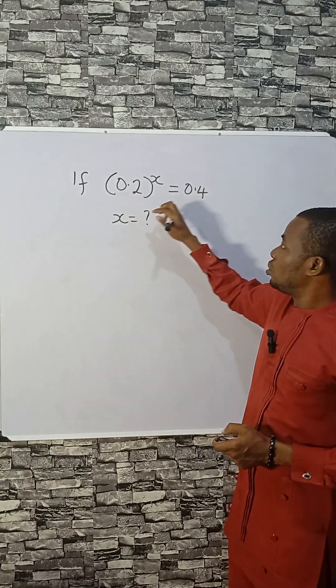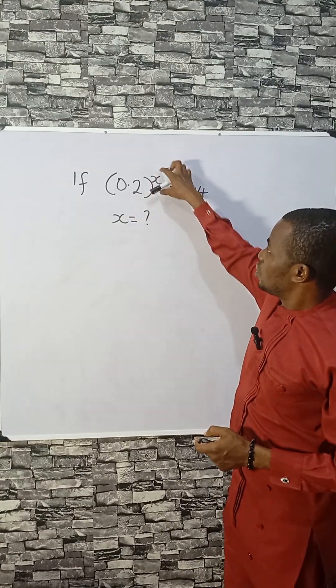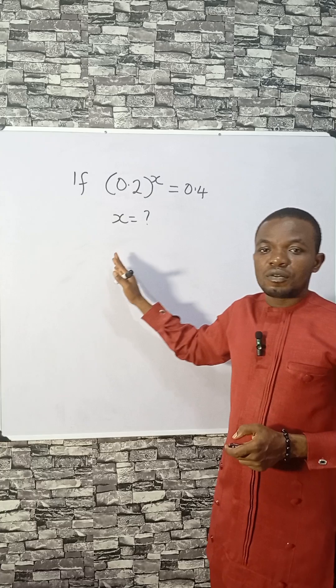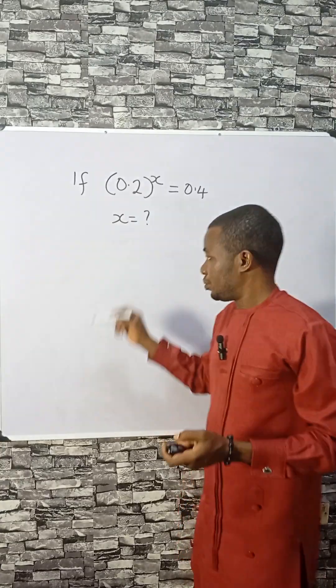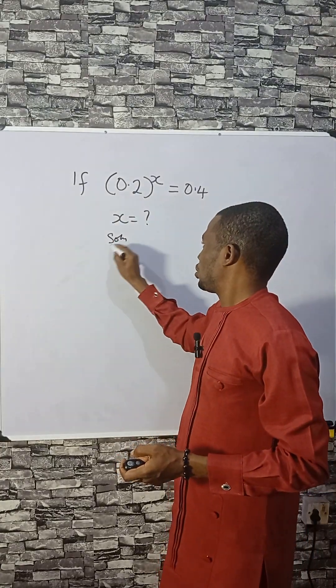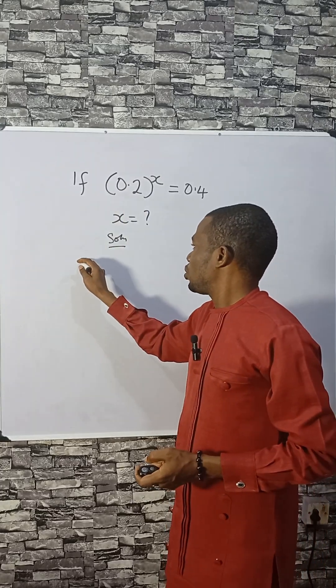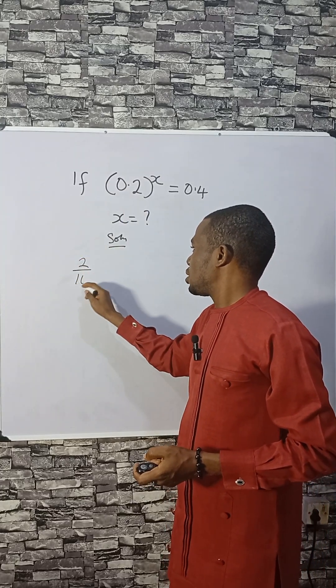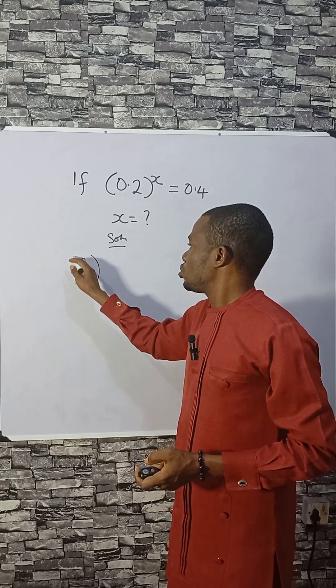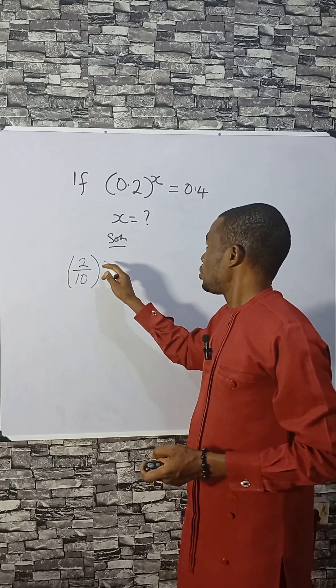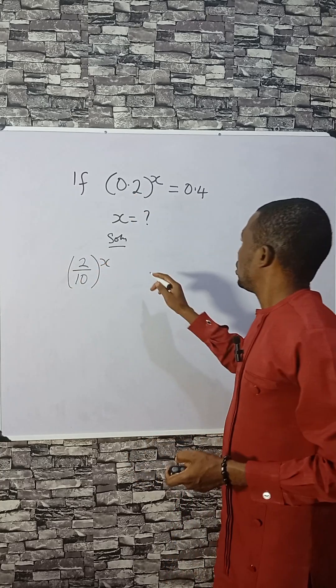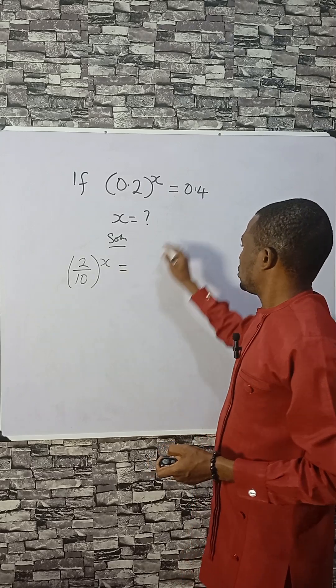If 0.2 raised to the power of x equals 0.4, find the value of x. Solution: Let's convert this first to a fraction. That will be 2 divided by 10. If you divide 2 by 10, you have 0.2.